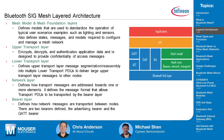Bluetooth SIG has redefined the whole software architecture for Bluetooth mesh. Looking at the diagram, the blue color represents the typical BLE architecture and the green is the new addition. The first new element is the mesh model — as mentioned, a mesh model is something like a dimmer, a light switch, or a temperature sensor.